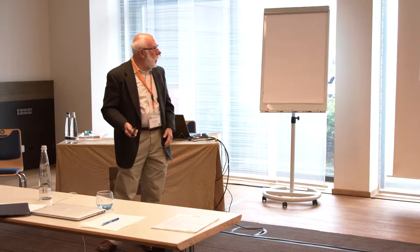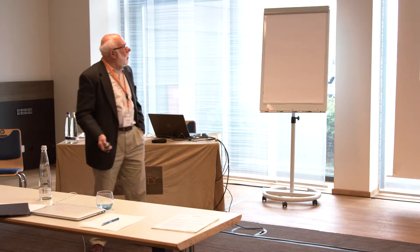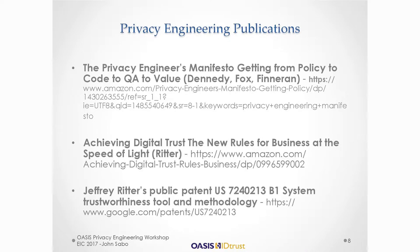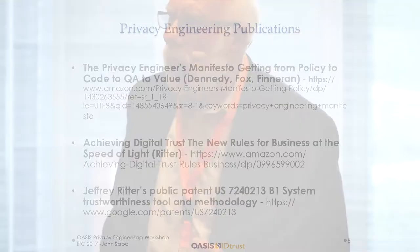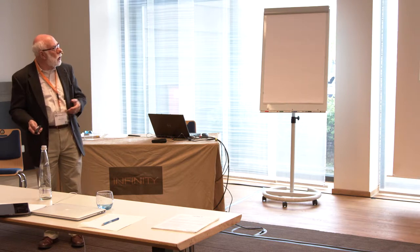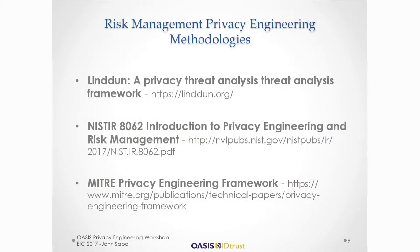The work that Antonio is doing — ISO 27550 — will be very important once it's available. Other documents you can get on Amazon: Privacy Engineer's Manifesto from Policy to Code by Identity Fox and Finernan. Jeffrey Ritter's Achieving Digital Trust — he has a patent on a trustworthiness tool and methodology, and it's an open patent. Antonio mentioned LINDDUN, the privacy threat analysis framework. We've talked about NIST 8062, the privacy engineering framework from MITRE. These are all available online.